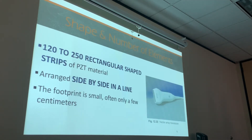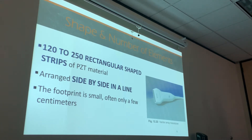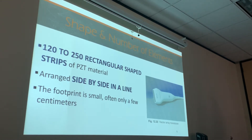It has 120 to 250 rectangular-shaped strips of PZT material, all arranged side-by-side in a line. Basically, all of our array transducers — except the annular array — are arranged side-by-side in a line, rectangular-shaped. The footprint is small, often only a few centimeters. It's not a very big transducer.